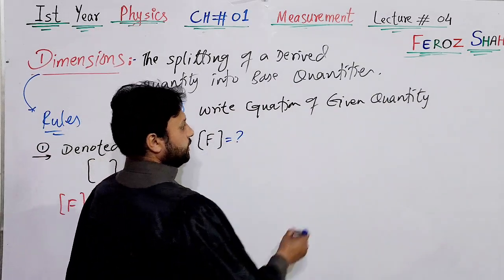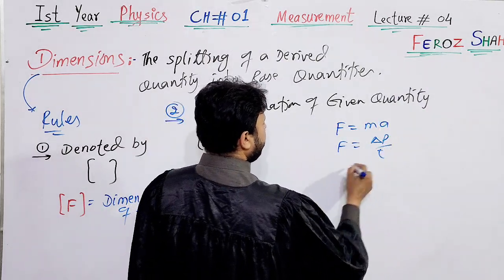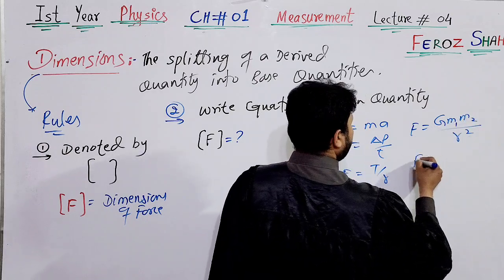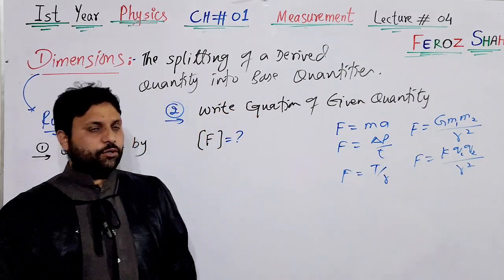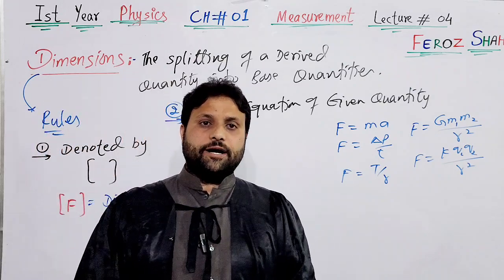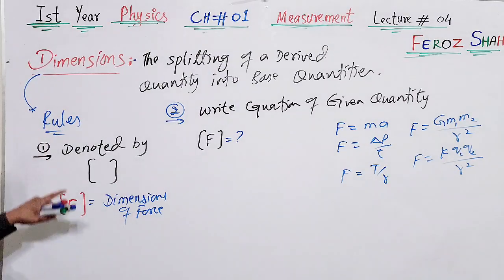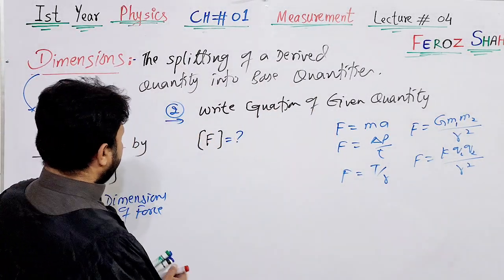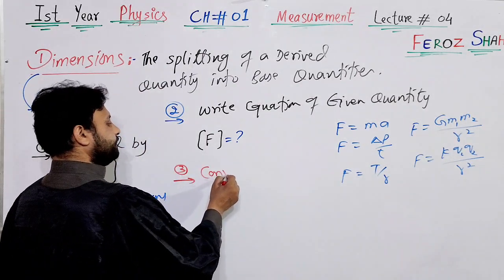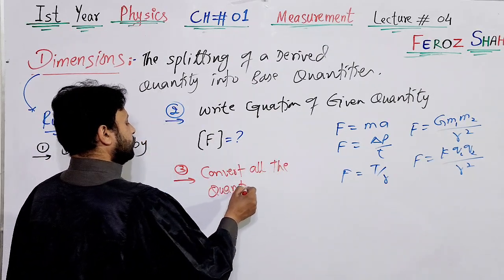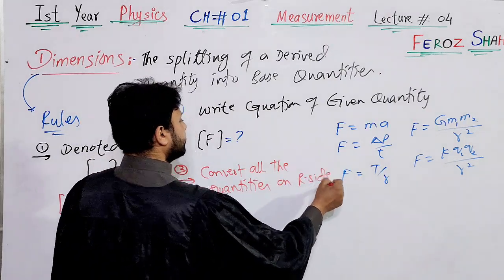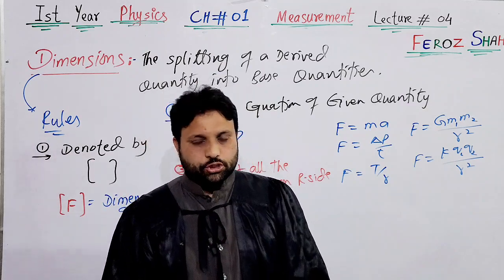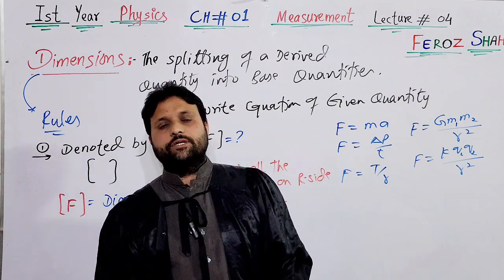For example, to find the dimensions of force you can use F = ma, F = ΔP/t, F = torque divided by moment arm, F = Gm₁m₂/r², or F = kq₁q₂/r². Any one of these equations can be used to find the dimension of force. Similarly, we can find the dimension of any quantity using any of its equations. Rule three: convert all quantities on the right side into their units.